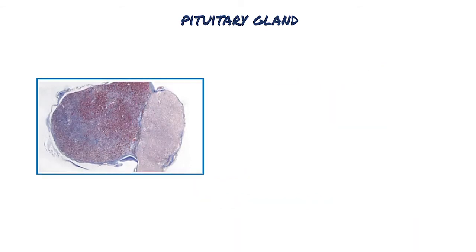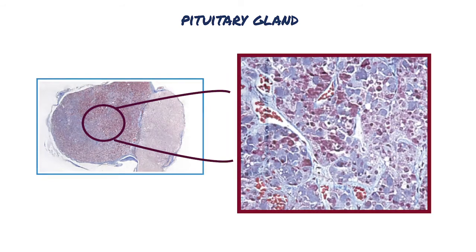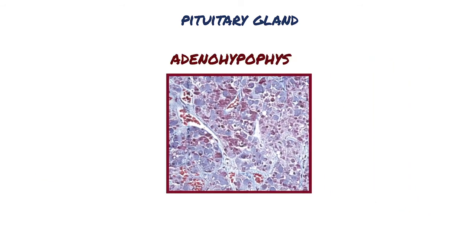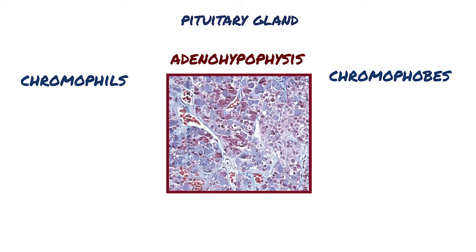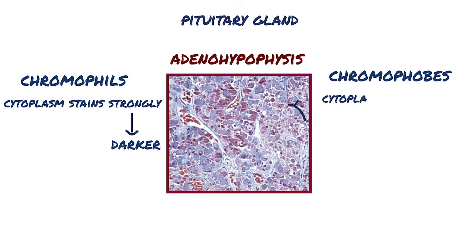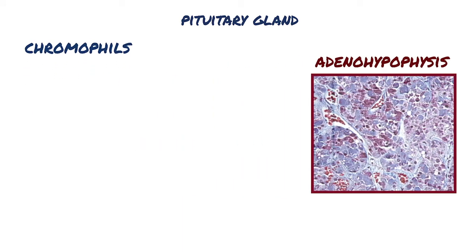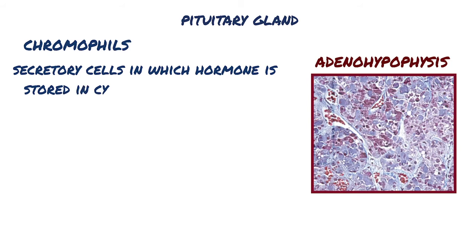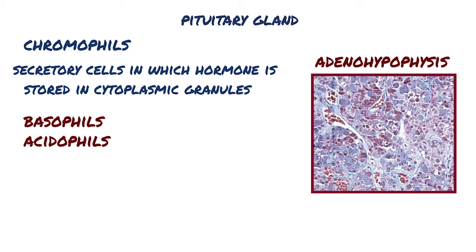Let's move anteriorly and take a closer look at the adenohypophysis. There are two main groups of cells that are named based on how well they stain: chromophils and chromophobes. The chromophils have cytoplasm that stains strongly and appears darker, while chromophobes have cytoplasm that stains weakly and appear lighter. Chromophils are secretory cells in which hormone is stored in cytoplasmic granules, and are also called basophils and acidophils based on their affinities for basic and acidic dyes, respectively.